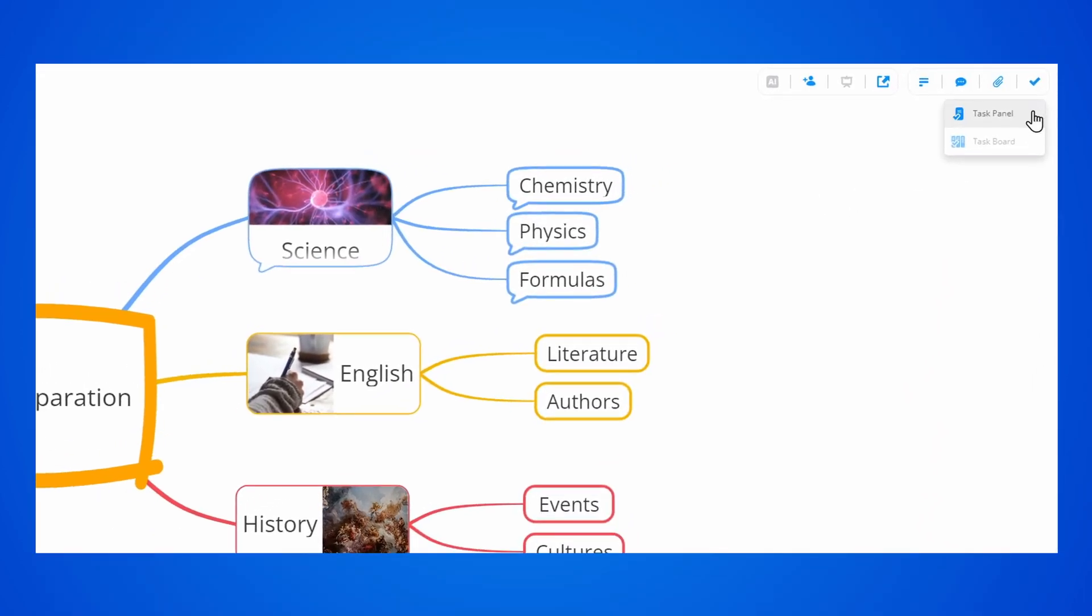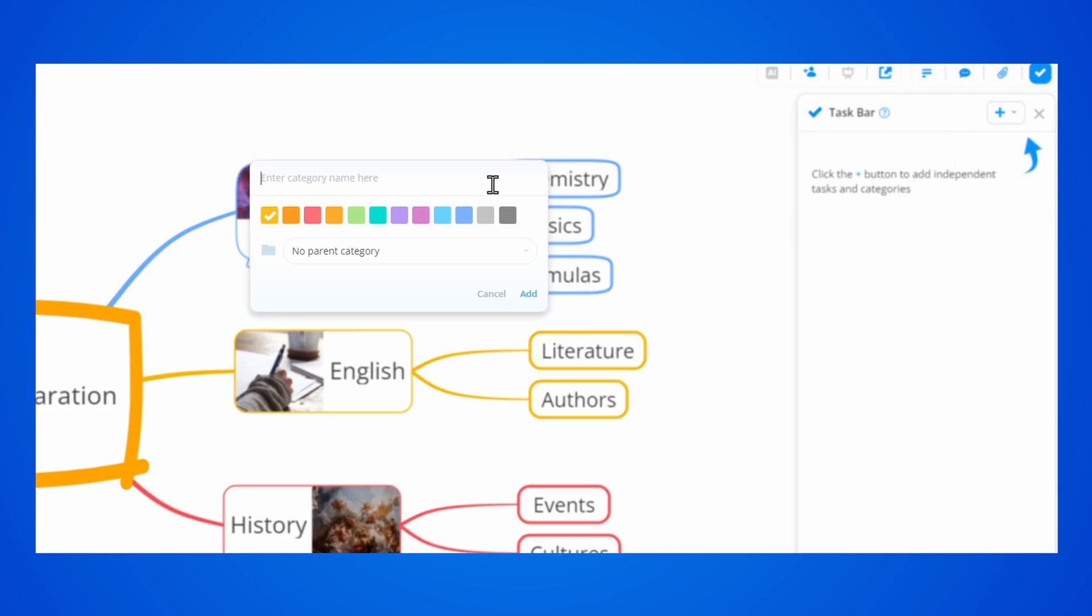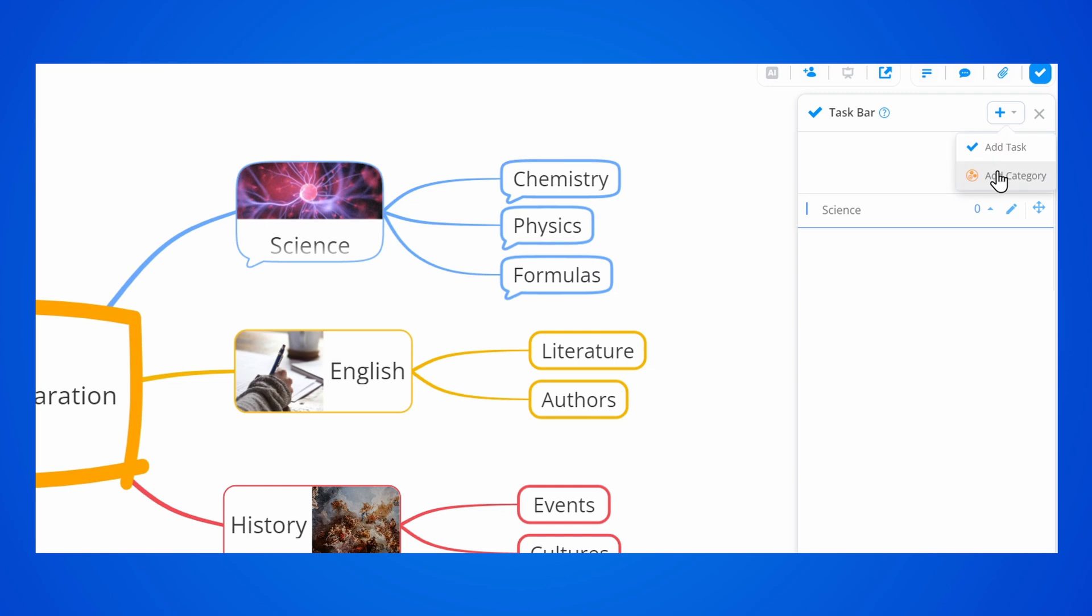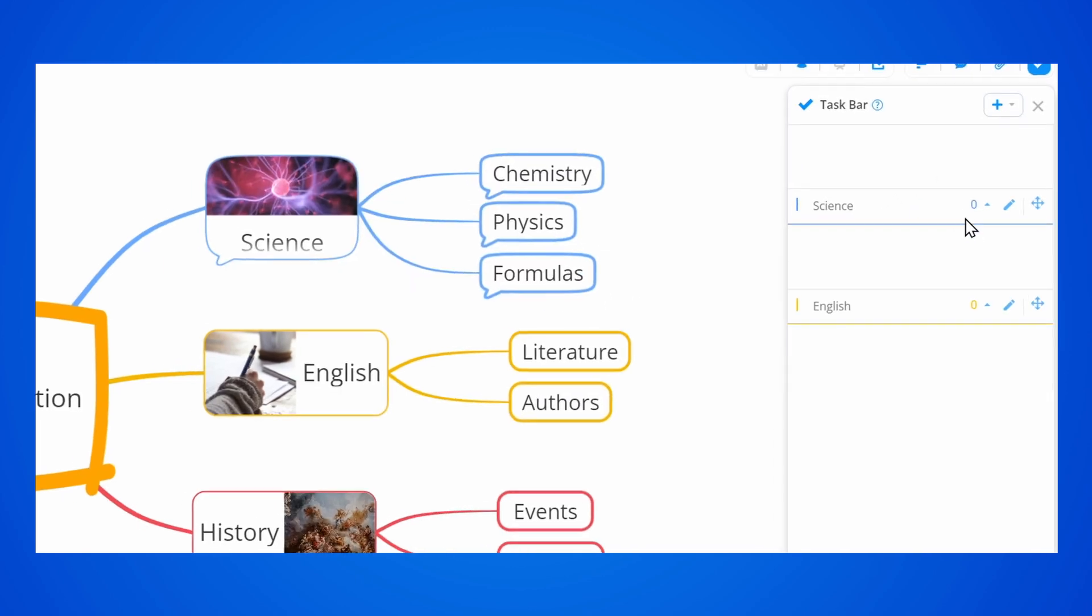When in a MyMap, you can access the task panel from the top right corner. Once there, you can click on the plus button to add categories and tasks. We can start by adding categories to make sure everything is nicely organized. You can color code the categories to achieve a really visual workspace.